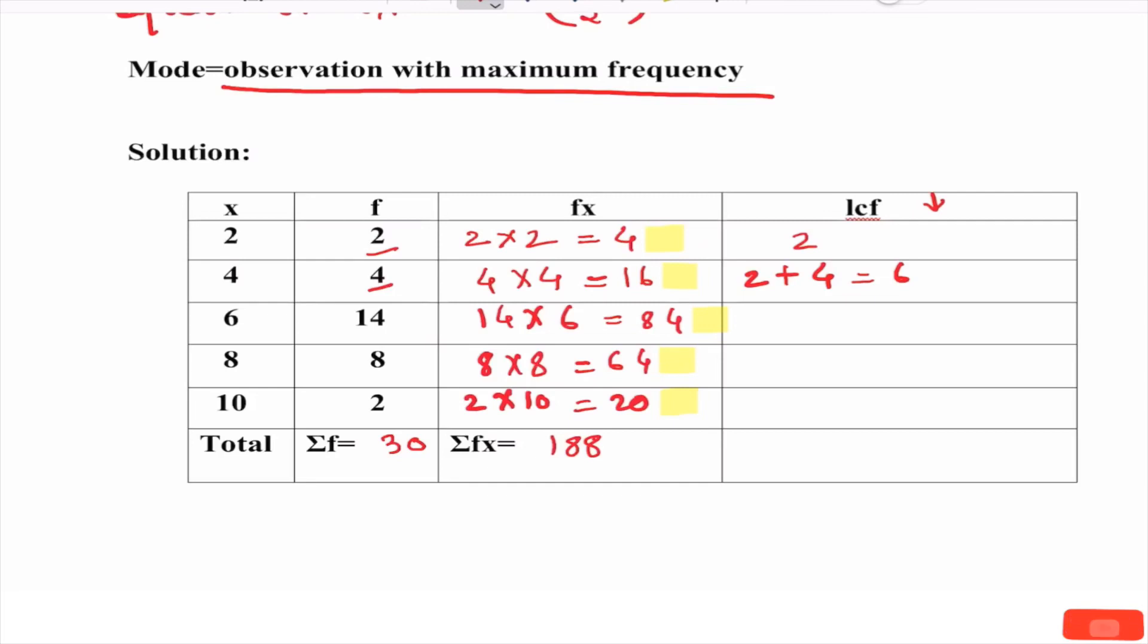Next LCF value is addition of first two frequencies, 2 plus 4, that is 6. Next value is addition of first three frequencies, 2 plus 4 plus 14, so what is the answer? 20. Next LCF value, add first four frequencies here. Answer is when we add 2, 4, 14 and 8, what is the answer? 28.